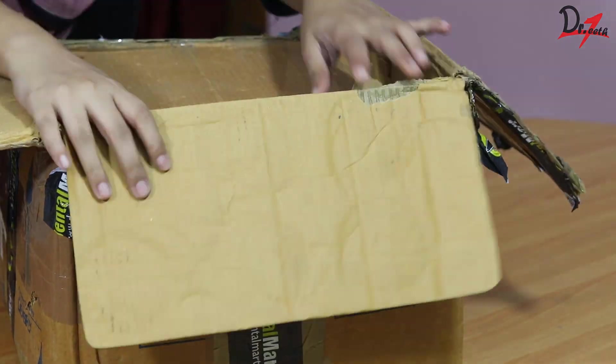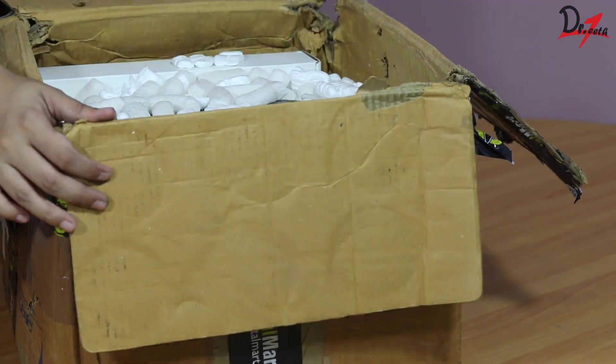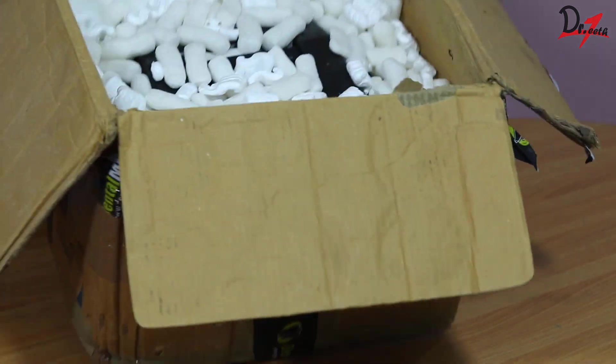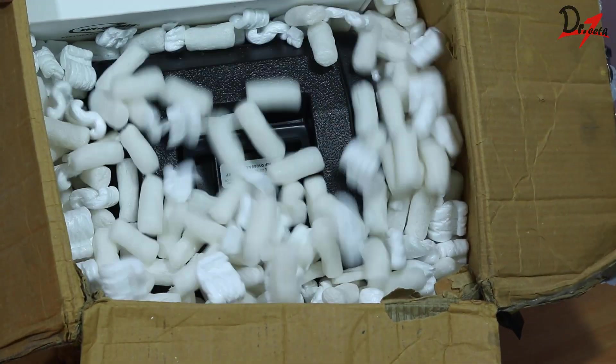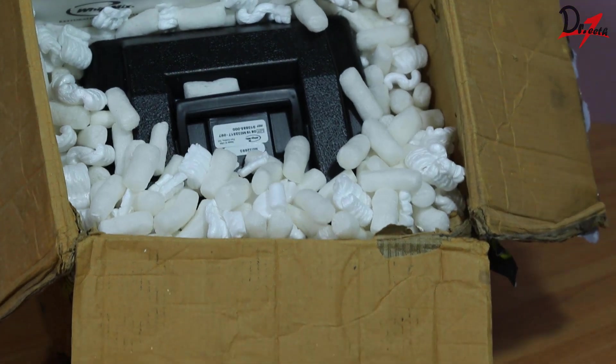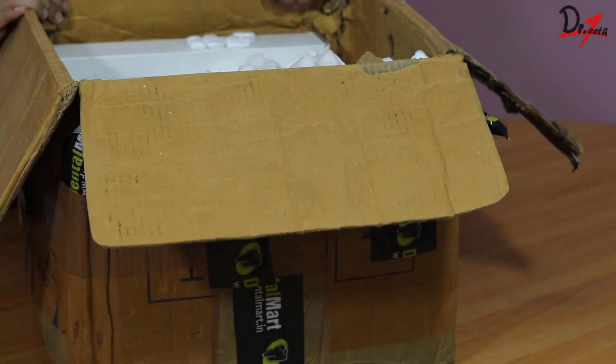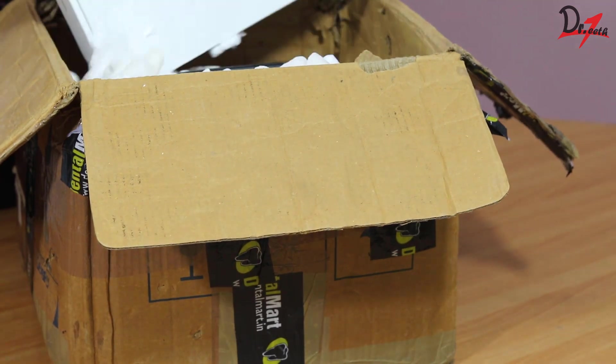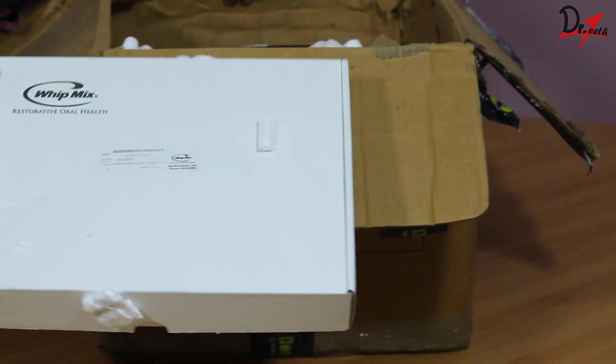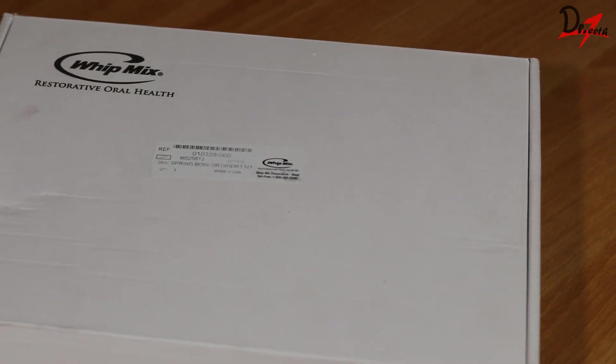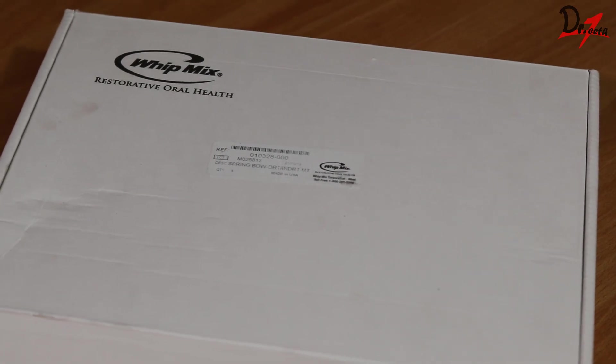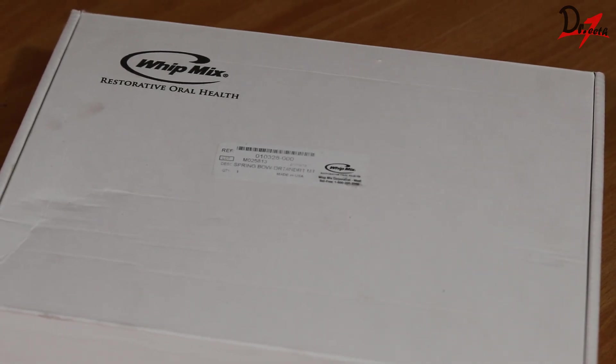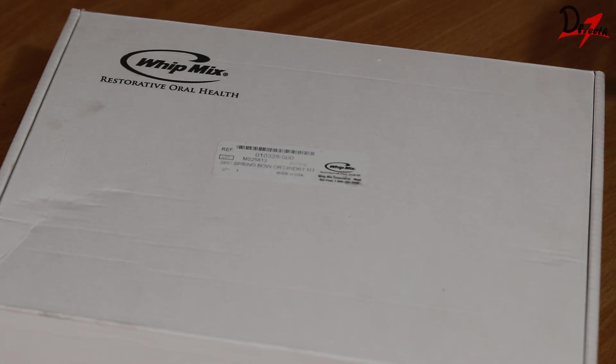Okay, so here we are inside the box and we have lots of foam balls for protection during transport. As you can see, we have the iconic black box of this articulator. We also have a white box inside for the face bow. So here we have it. It says Whipmix Restorative Oral Health. Let's open it for the very first time and see what all we have inside.